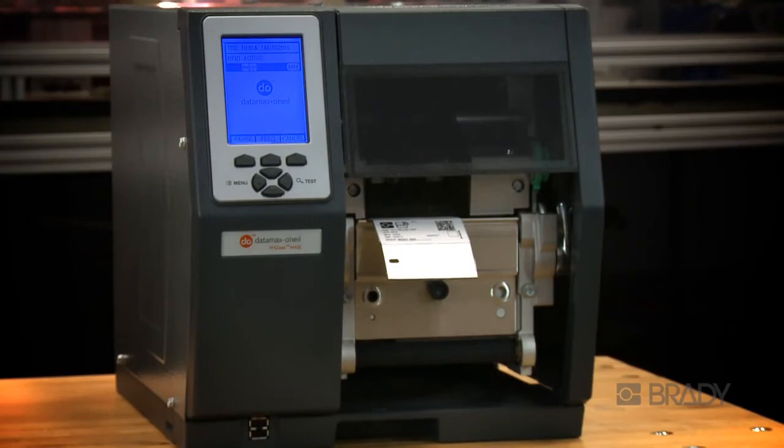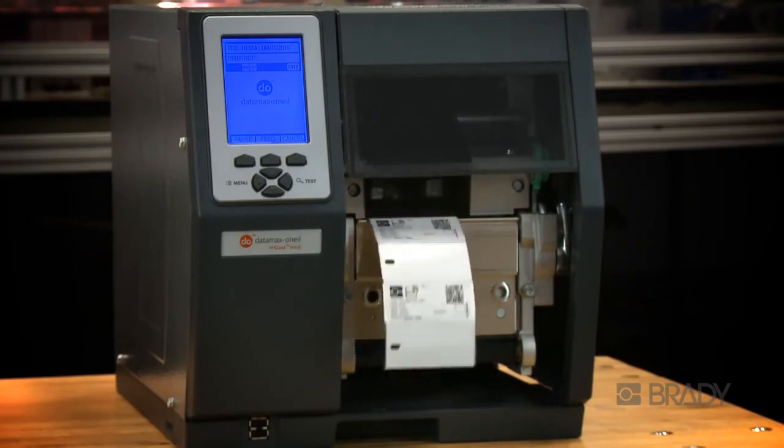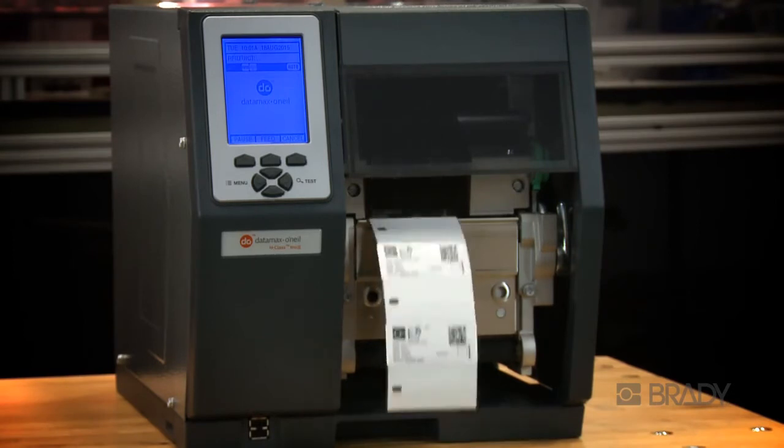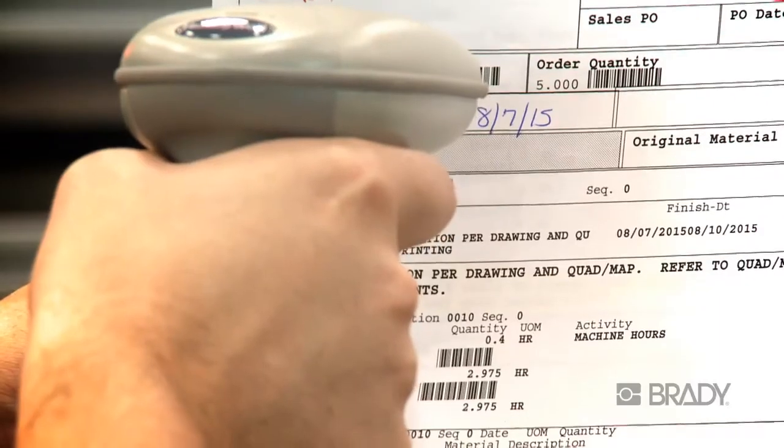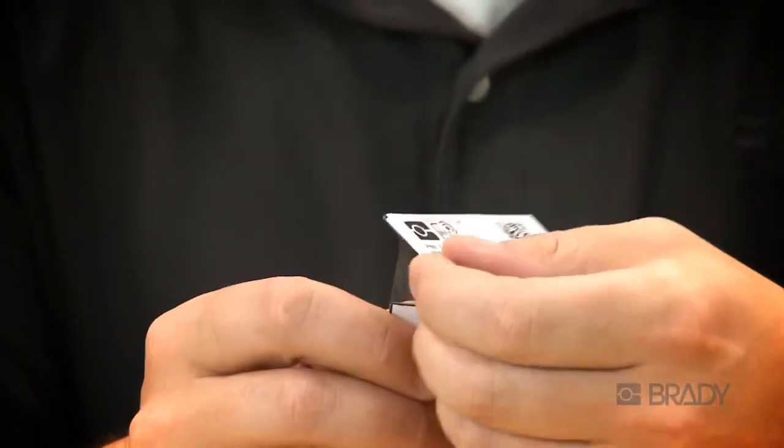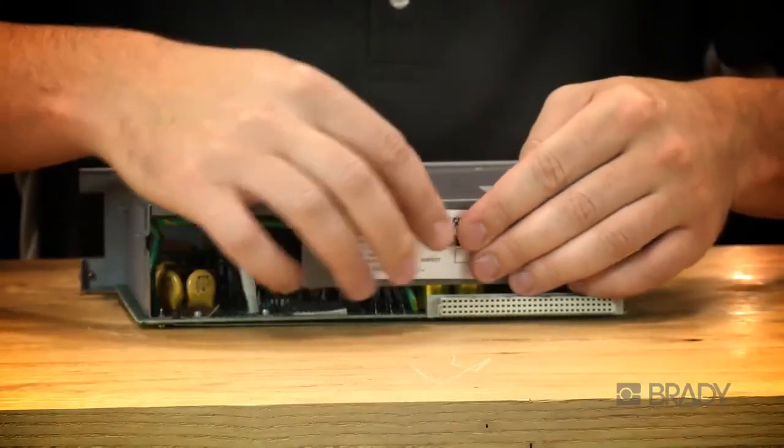RollStock labels allow for rapid printing of multiple serialized labels, or print automatically by scanning a work order or other barcode. Labels peel easily and affix permanently to critical parts.